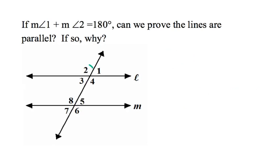Angles 1 and 2 are very similar to a linear pair — a linear pair cannot prove parallel lines, because both angle 2 and angle 1 touch line L. To prove parallel lines, the angles have to be on separate lines. So this is a no.